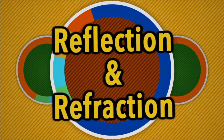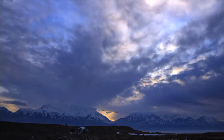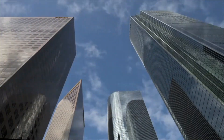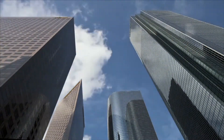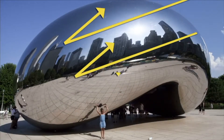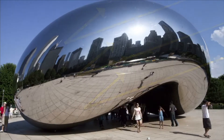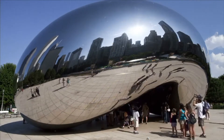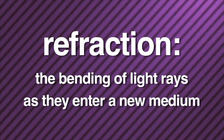Reflection and refraction. The reason you are able to see anything is because light reflects off objects. The way that light will reflect off an object depends on the object's surface. When light rays hit a rough surface, the light scatters in different directions. But when light hits a smooth surface like a mirror, all of the rays go in one direction — the light bounces off the mirror and bounces right back in one direction. A property of light that we have not discussed yet is refraction: the bending of light rays as they enter a new medium.